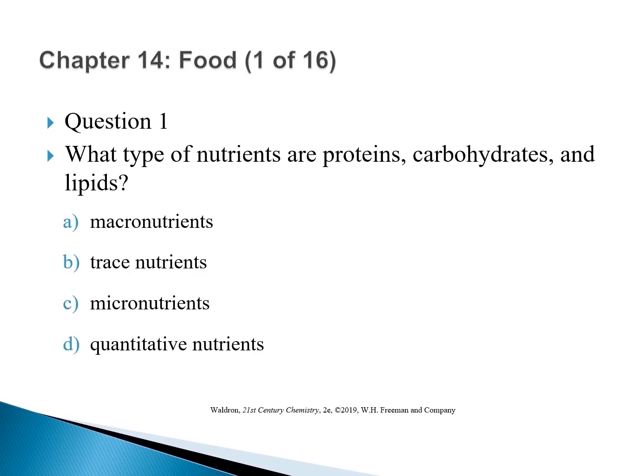Question 1: What type of nutrients are proteins, carbohydrates, and lipids? The correct answer is A — macronutrients. The human body requires these nutrients in large amounts, therefore they are macronutrients.